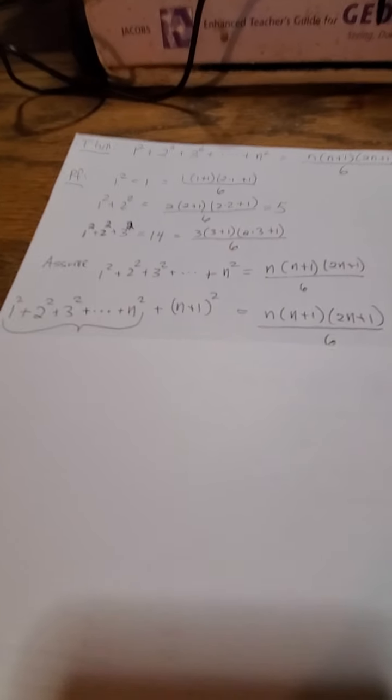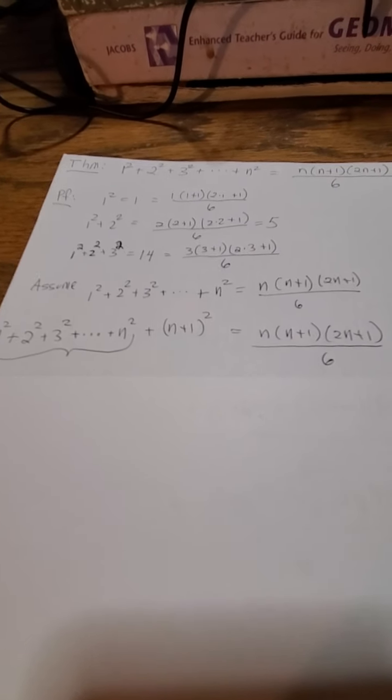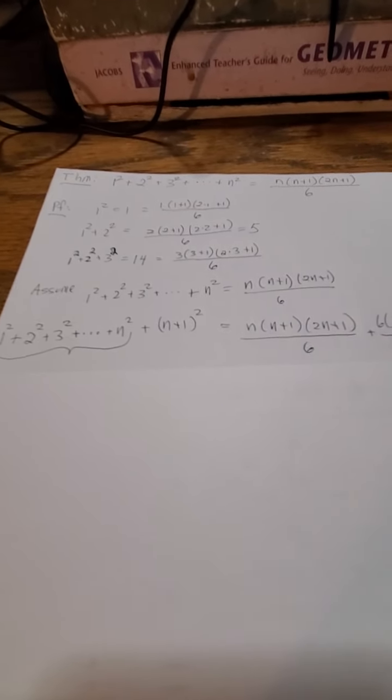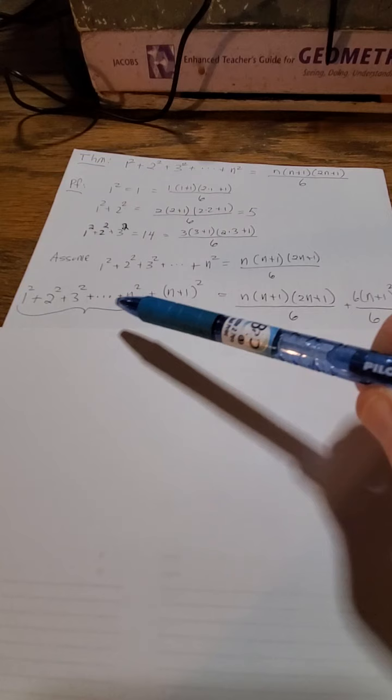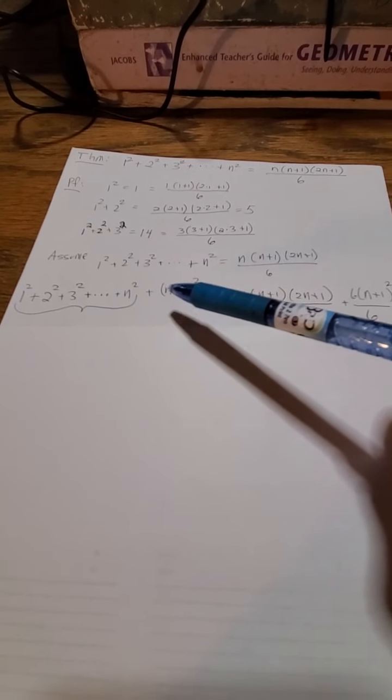But given any number n where this works, where this formula happens to work, I want to prove that if it works for a number n, it's automatically going to work for the number n plus 1. What I'm going to do is I'm going to take this equation and add n plus 1 squared. So, now on this side, I have 1 squared plus 2 squared plus dot dot plus n squared plus n plus 1 squared.